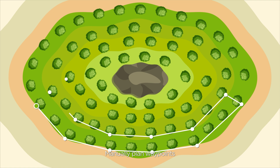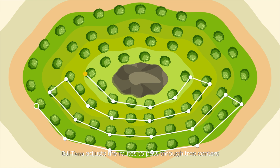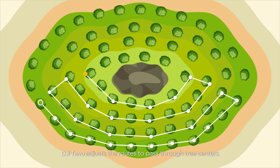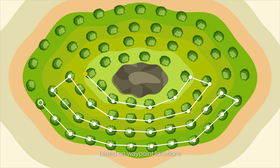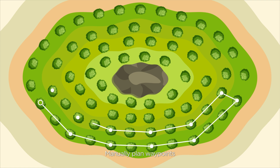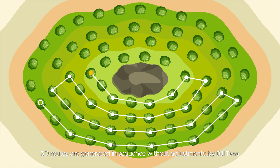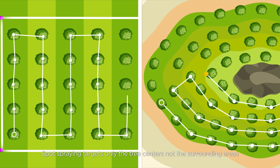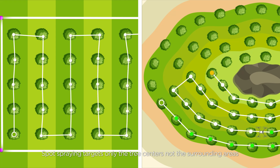Semi-automated: manually plan waypoints. DJI Terra adjusts the routes to pass through tree centers based on waypoint locations. Manual: manually plan waypoints; 3D routes are generated in sequence without adjustments by DJI Terra. Spot Spraying targets only the tree centers, not the surrounding areas.